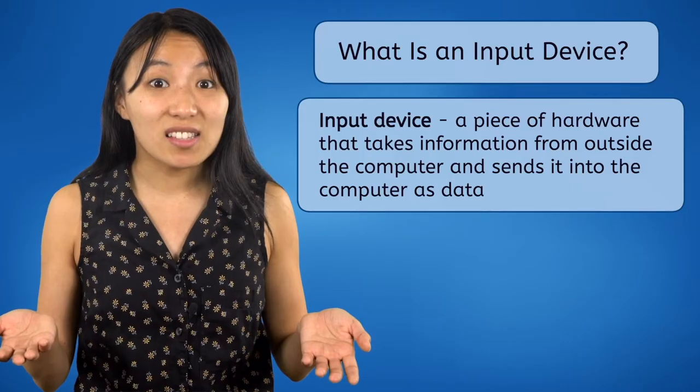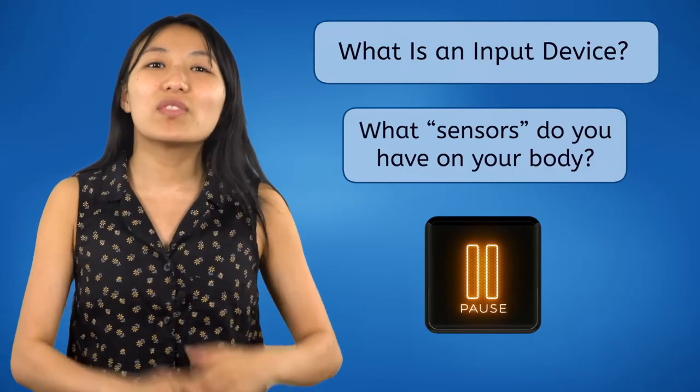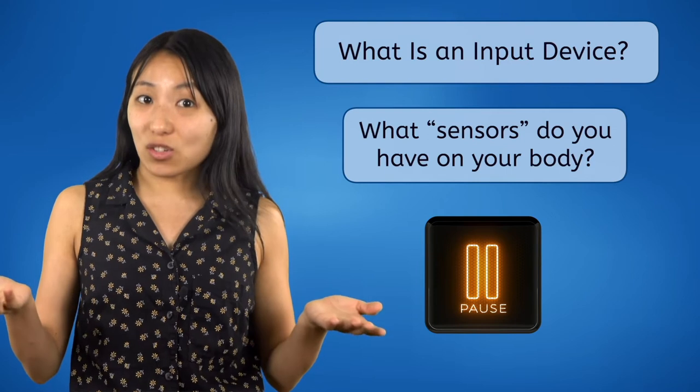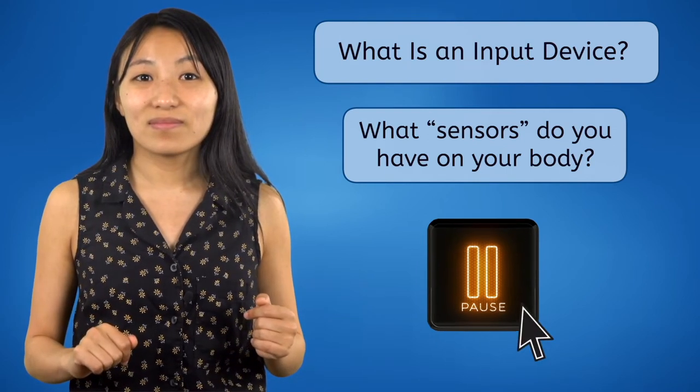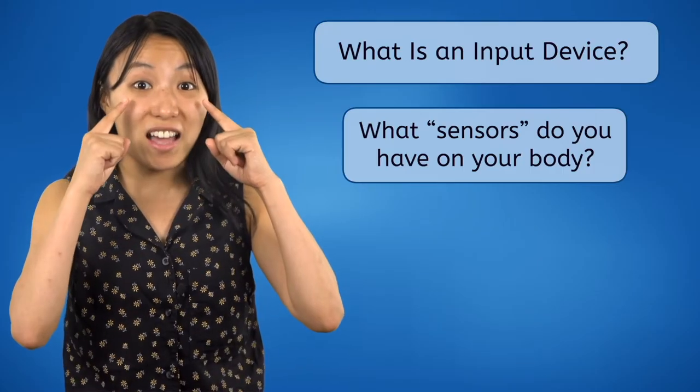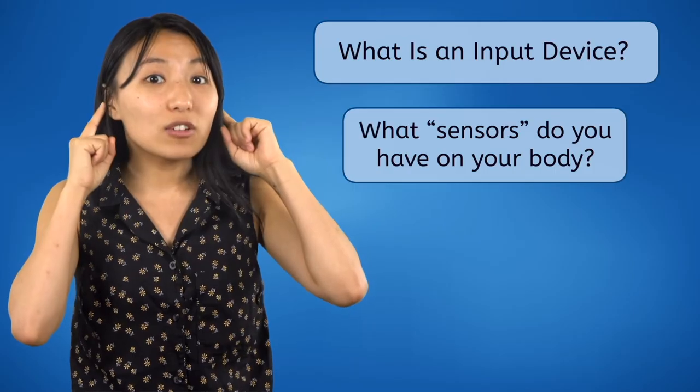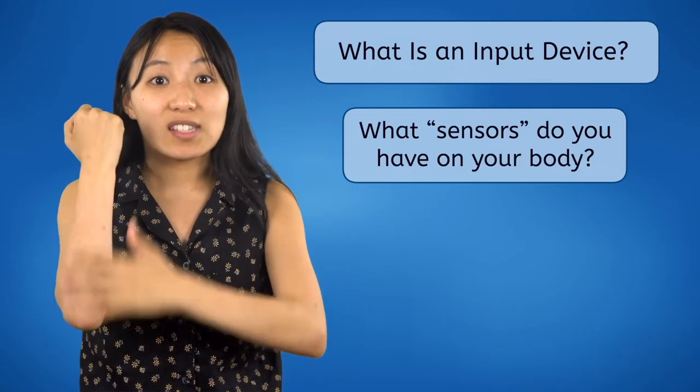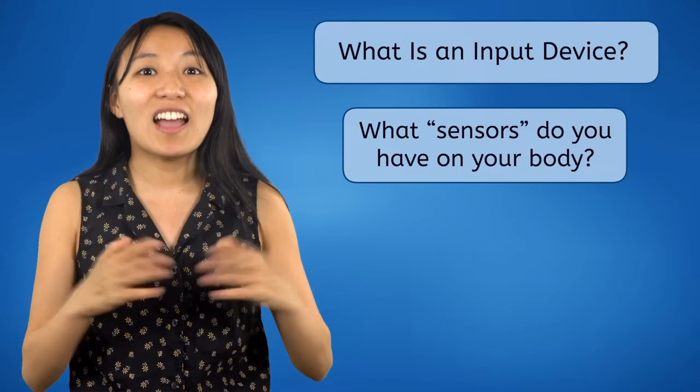Think about what sends information about the world around you to your brain. Pause the video and answer this question in your guided notes. What sensors do you have on your body? I have eyes, which take in visual information, like a camera. I have ears, which take in audio information, like a microphone. And I have skin, a nose, and taste buds, which are unlike anything a computer has.